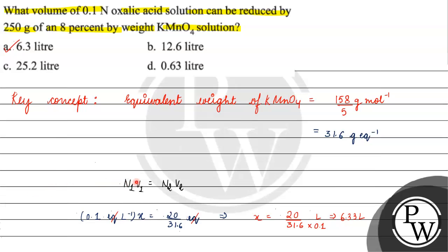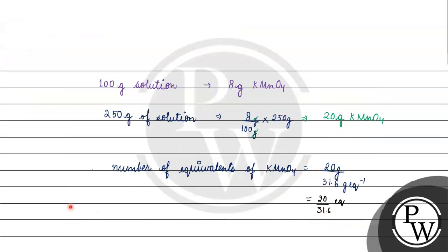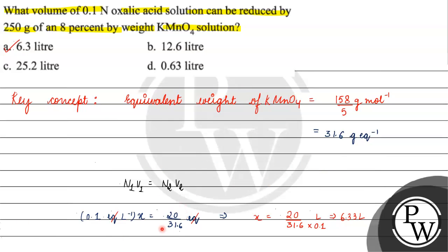I hope you understand how we determined the equivalent weight of KMnO4 and calculated the number of equivalents, then used N1V1 equals N2V2. We used N1V1 directly for oxalic acid, but for N2V2 we first calculated the equivalents of KMnO4. Thank you and all the best.